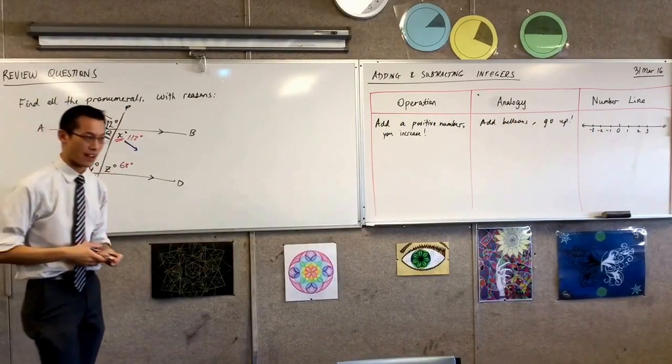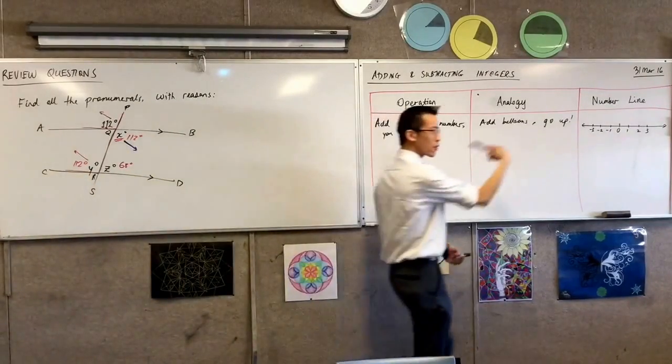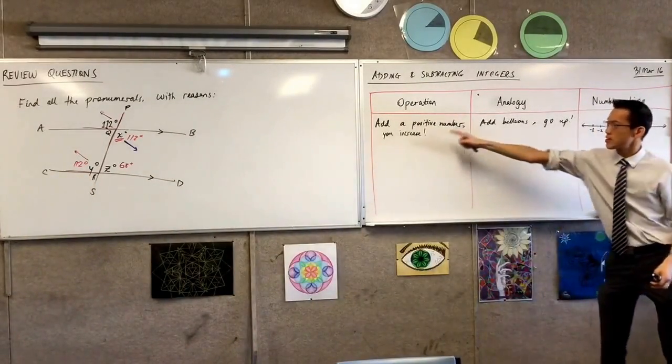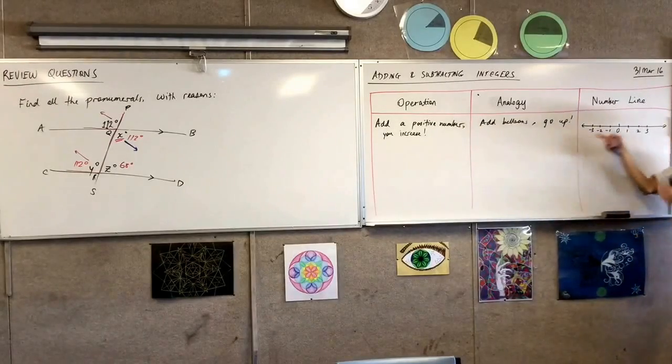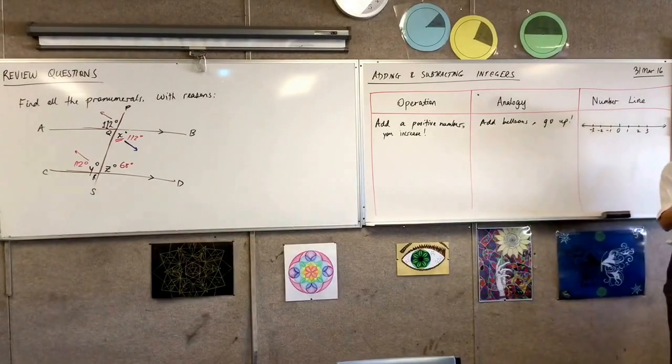Now, with your number line over there on the right-hand side, if you have another color, that'd be nice, but if you don't, it's all right. I want to take you a picture of what's going on here. What is this operation in this analogy? What does it look like on the number line? We just said we would start with, like, say, zero.